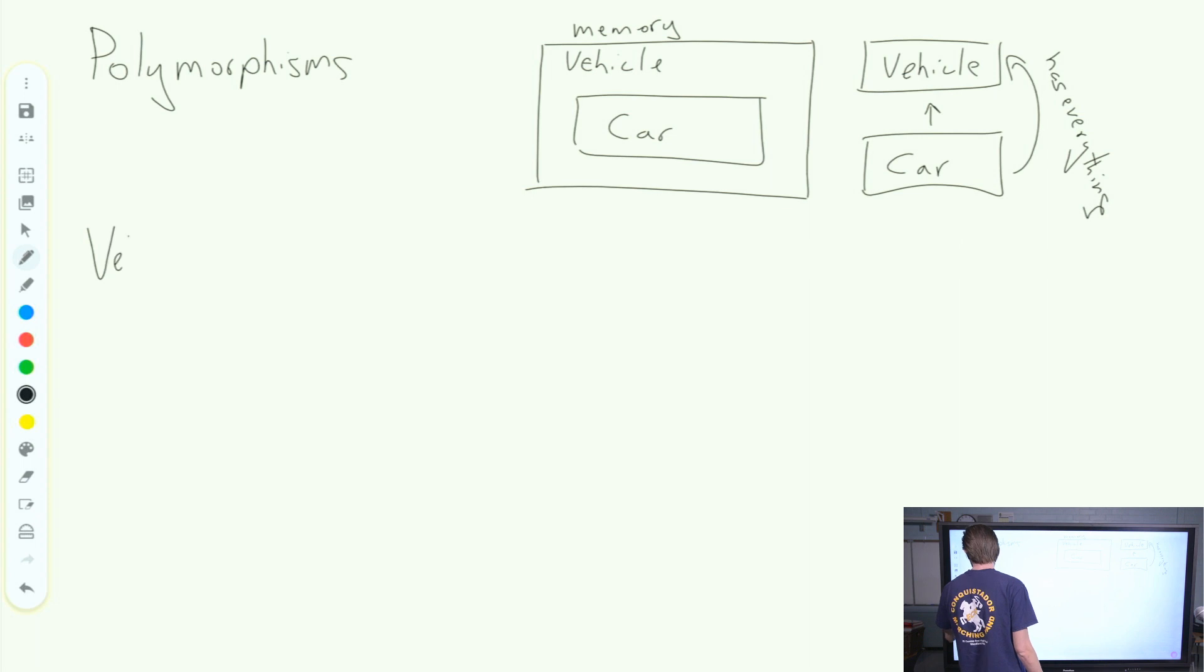So we could say vehicle, vehicle V, gets the value of a new car. Every time I say that, I feel like I want to be on the price is right. A new car, right? So our vehicle gets a new car. Now, this car has everything that the vehicle would use.